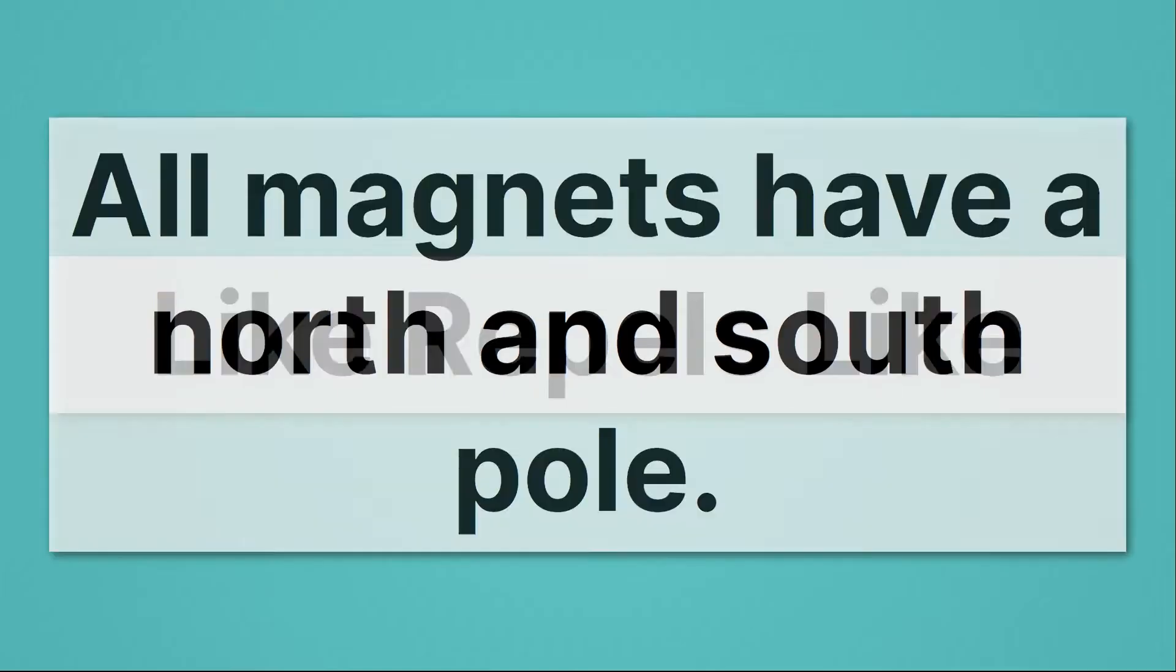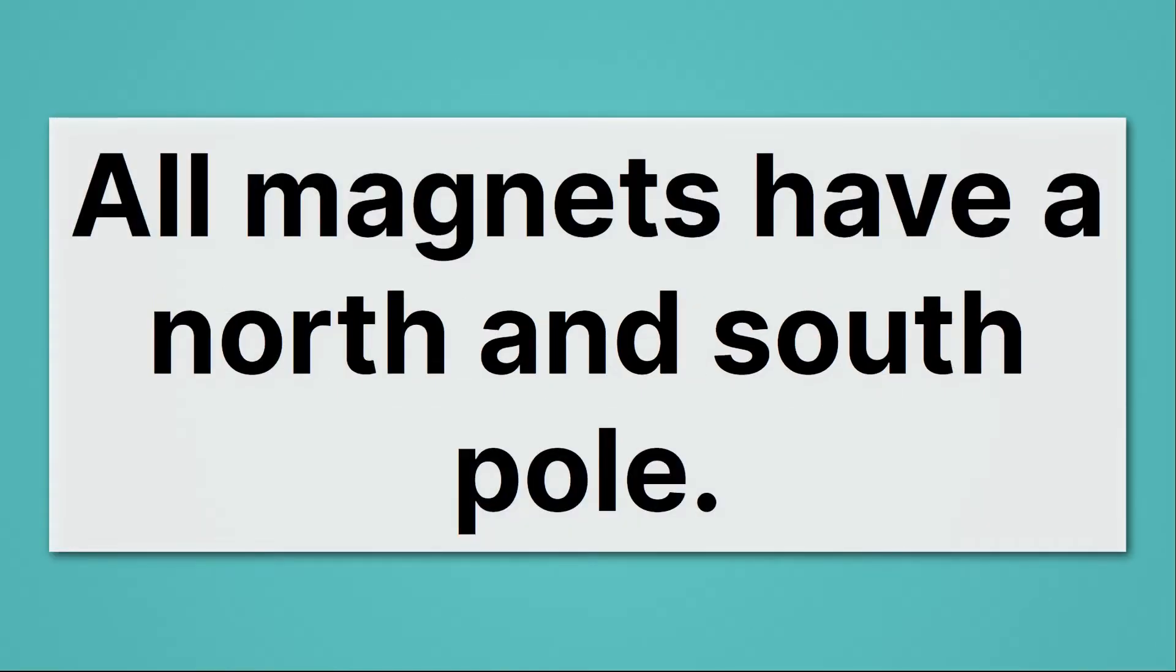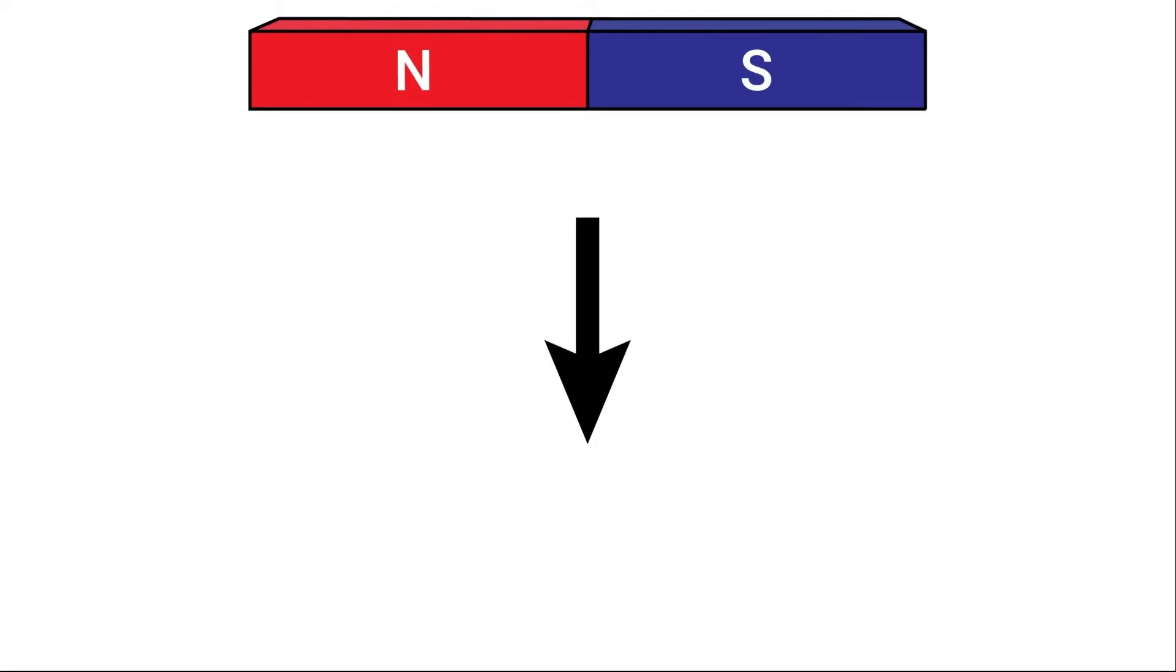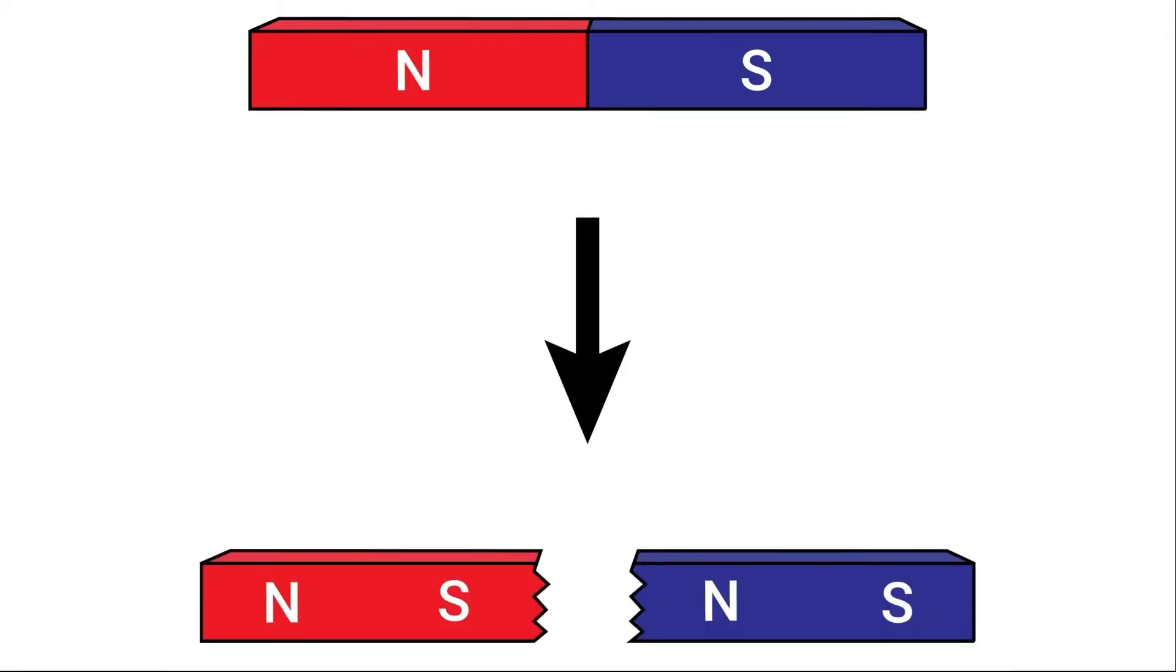Here's the thing about magnets. All magnets have a north and south pole. Every combination I showed you previously had a north and south pole. Now you might be thinking to yourself, what if I take a normal magnet and I snap it in half? Couldn't I then get just a north and just a south? The answer is actually no.